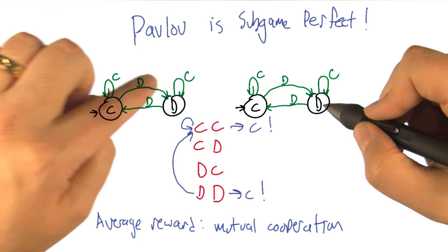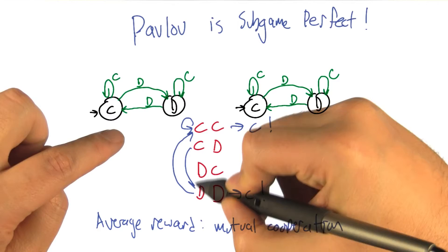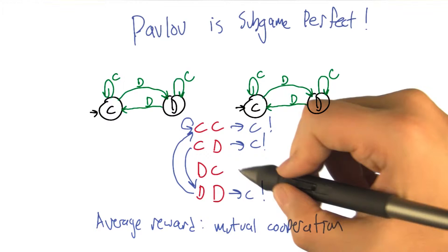And this guy just cooperated, which causes this transition, so that we've gone to defect defect. Which means that we're going to average cooperation, because that's where we're going to get stuck in the long run. Right. And the same thing works through here.